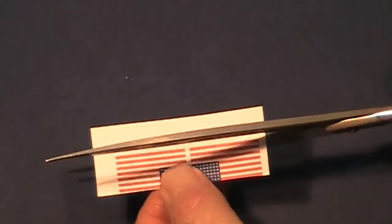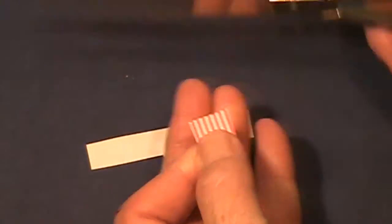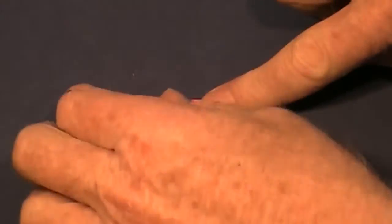Just cut along the edges of the flags very slowly and carefully. Take your time, and once you have the flags cut out, cut off each end of the white paper, and there you have it.